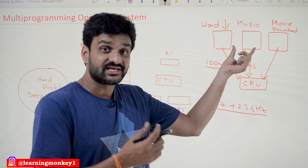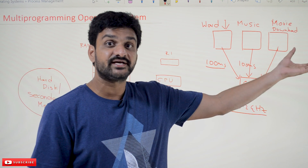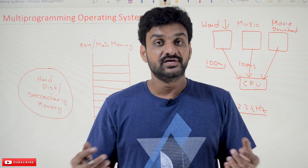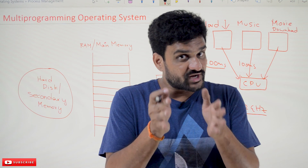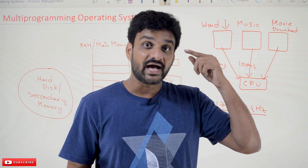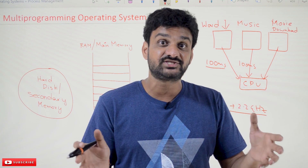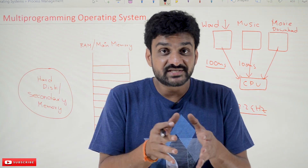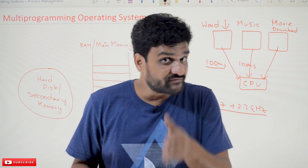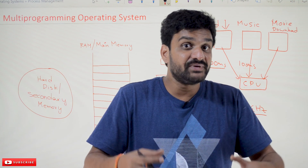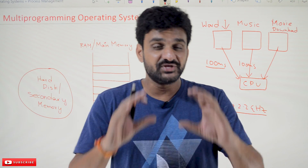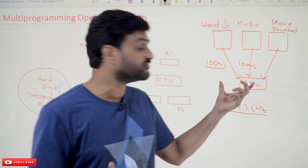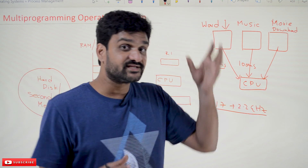Within one single second, these many programs are getting executed. As human beings, we cannot sense the rate at which the CPU is switching between them. Within that one second, multiple programs are getting executed, but our brain cannot sense the rate at which those programs are getting executed. That is the reason why we get the effect of multi-programming. This point is very important to understand because the entire course is based upon this concept of multi-programming.